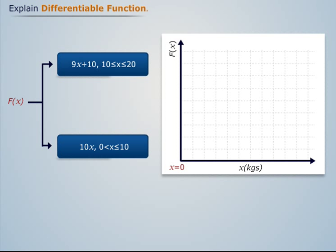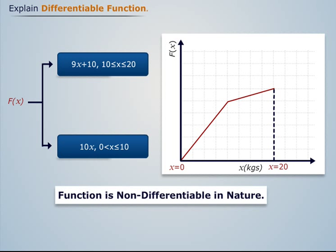Taking the boundary from x equal to 0 to x equal to 20, we see that the curve has one sharp turn between these boundaries. This means the curve is not smooth throughout this boundary, and thus we can say that the function is non-differentiable in nature.